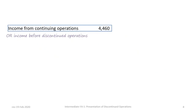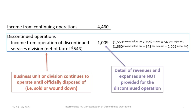The discontinued operations section comes after income from continuing operations, which may also be identified as income before discontinued operations — either is acceptable. The first item in the DO section is the disclosure and presentation of any income or losses generated by operating the operation up until the point of disposition. The division or business unit up for sale is still fully operational, but any income or loss generated from the discontinued operation is disclosed separately from normal continuing operations.